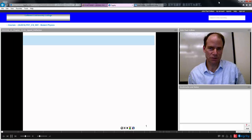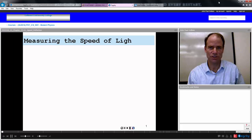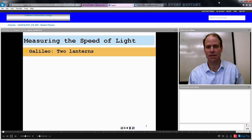This is the first of two short lectures in Chapter 35 dealing with light and geometric optics. First of all, there have been several attempts in history to measure the speed of light.